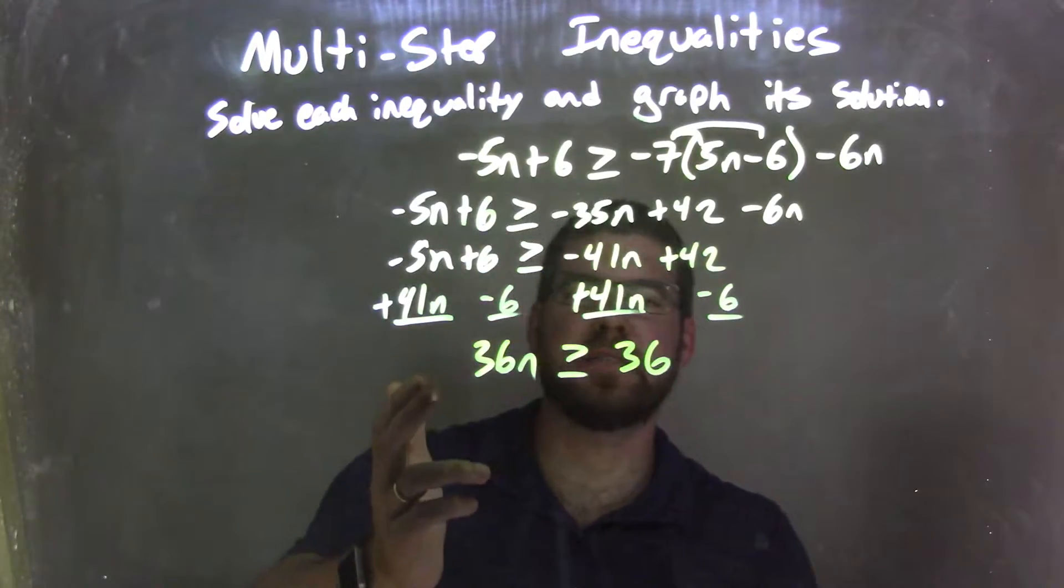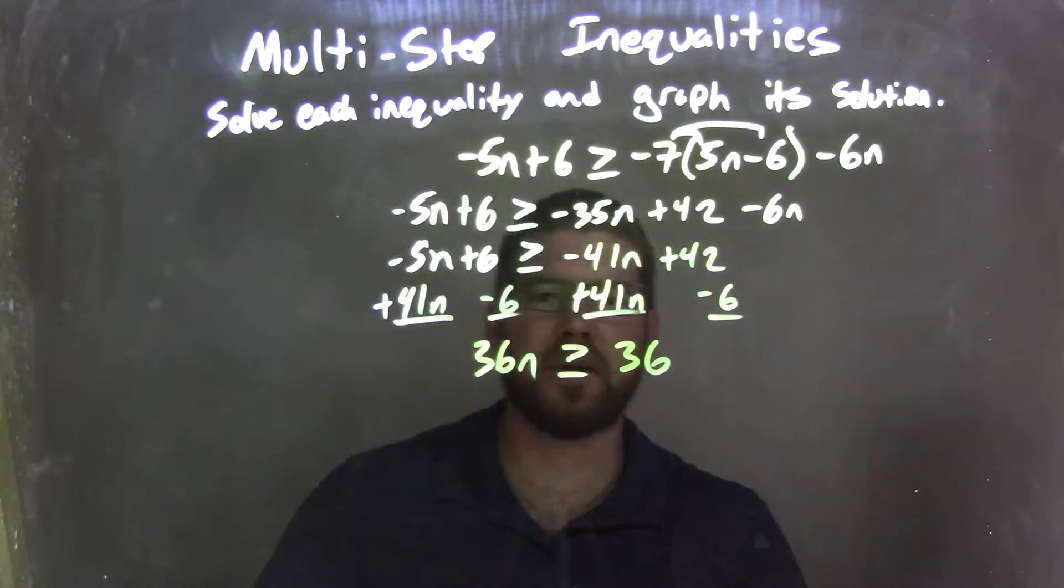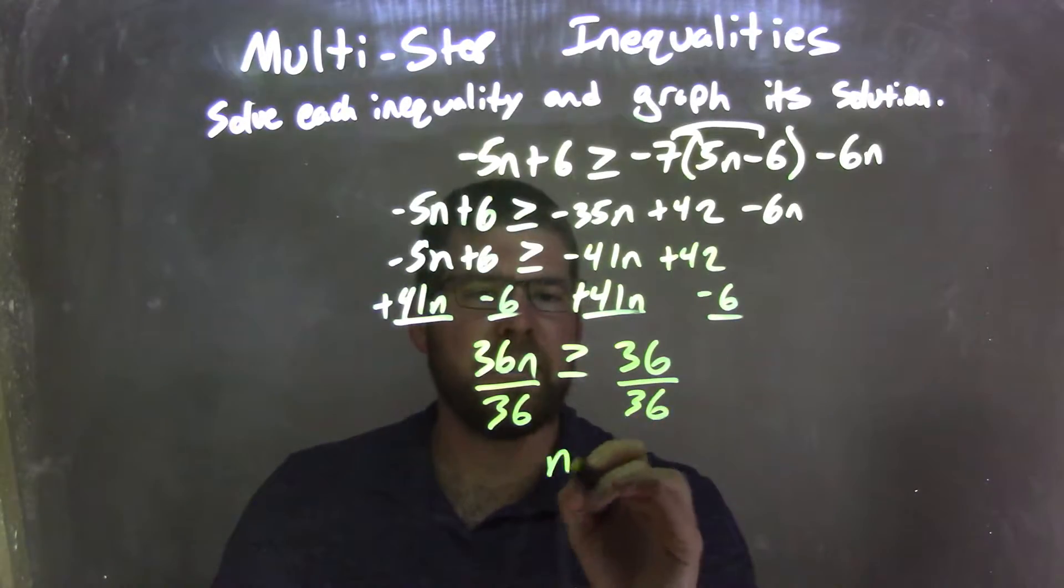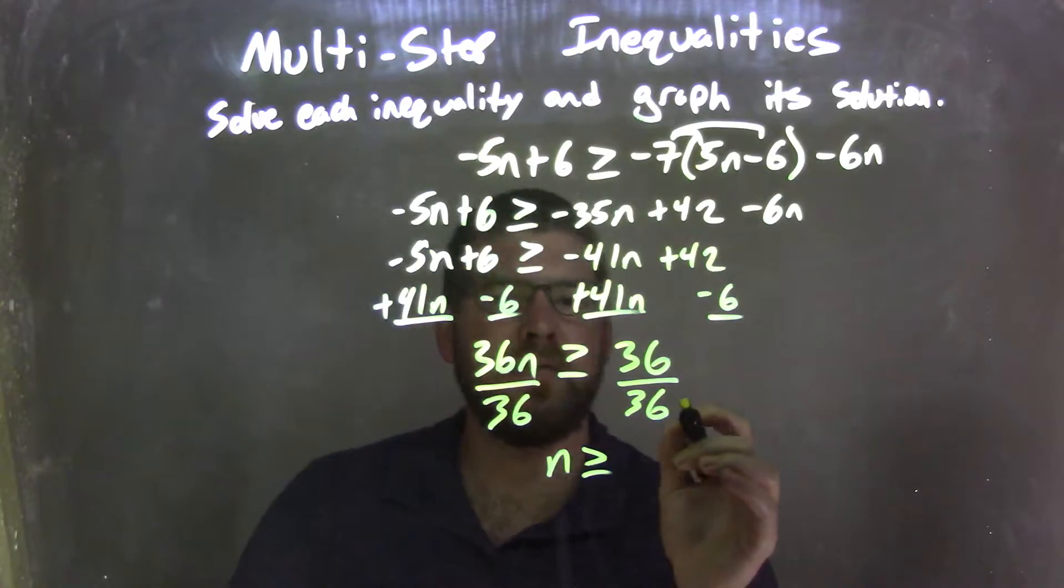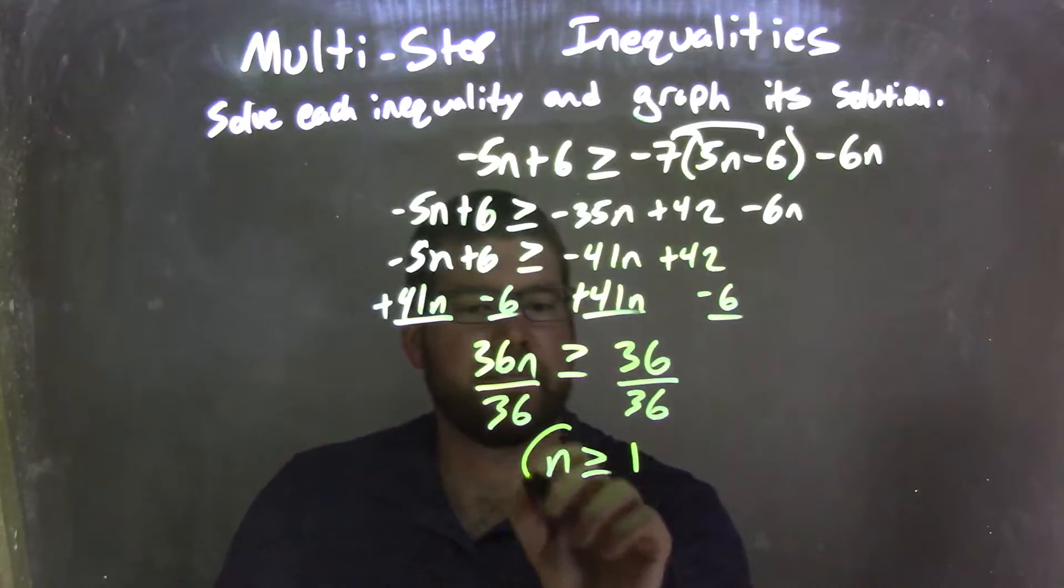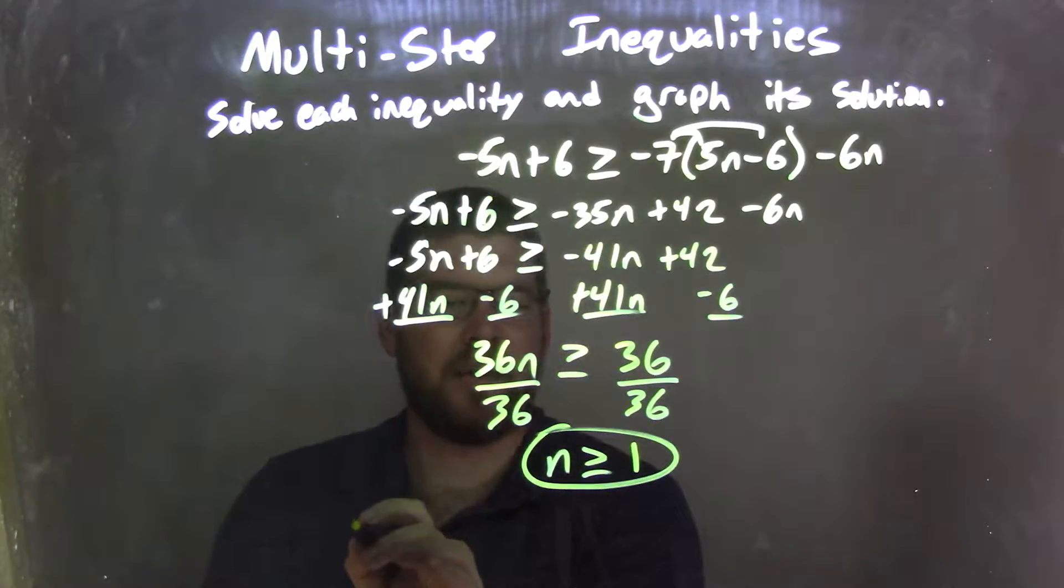So now we have 36n is greater than or equal to 36. I divide by 36 on both sides, leaving me with n by itself on the left. And it's greater than or equal to 36 divided by 36, which is 1. So now we have n isolated. I can graph it.